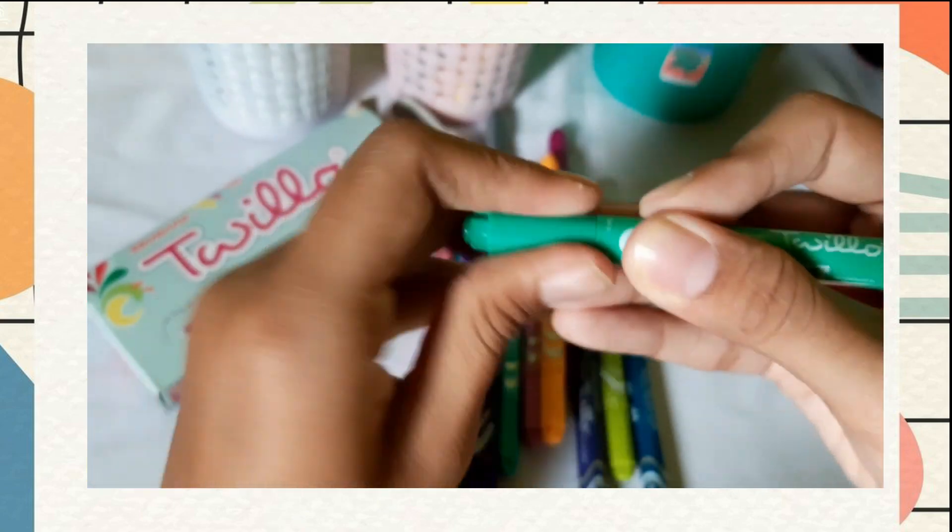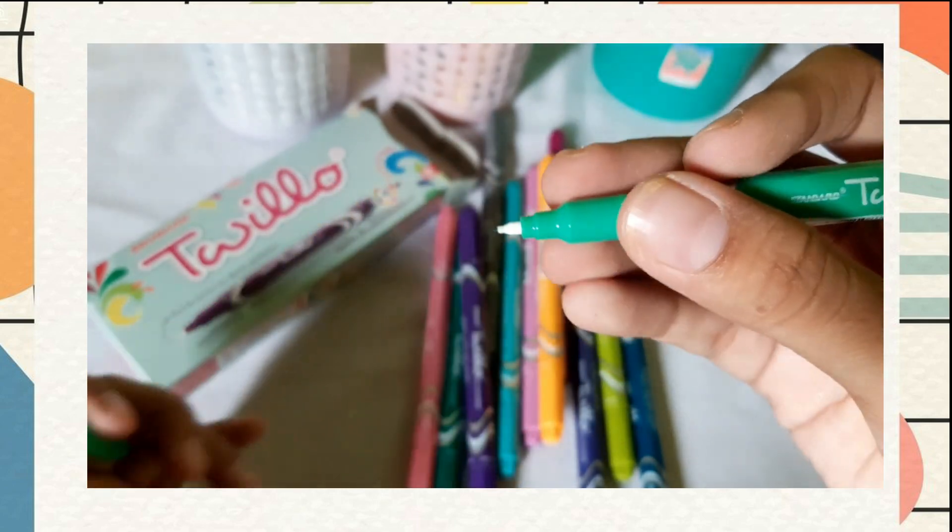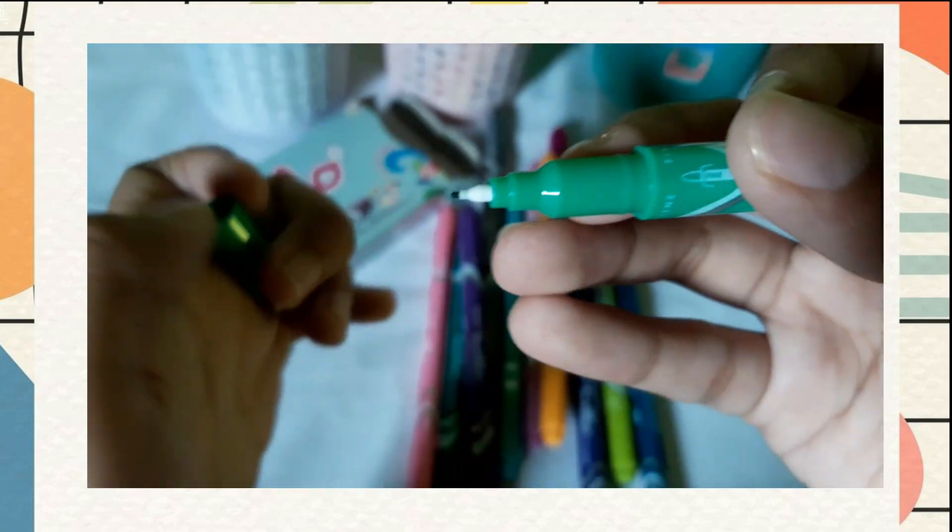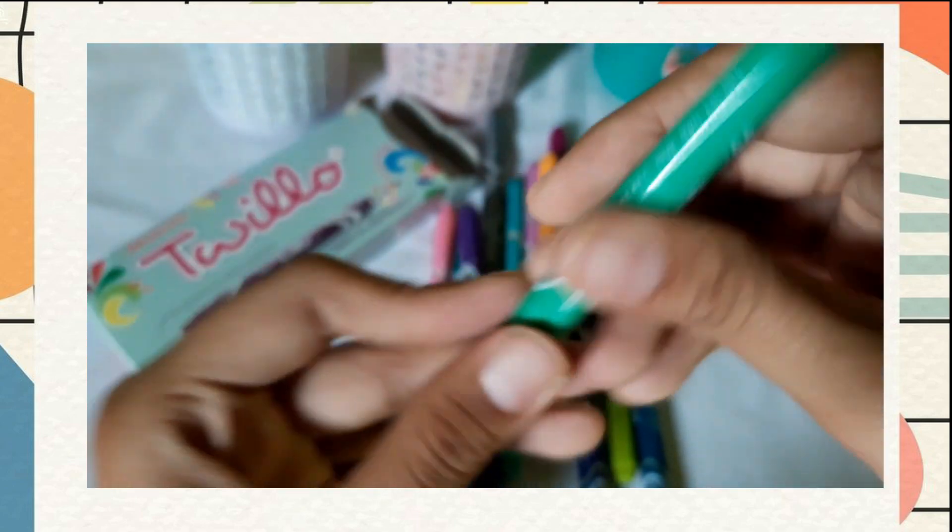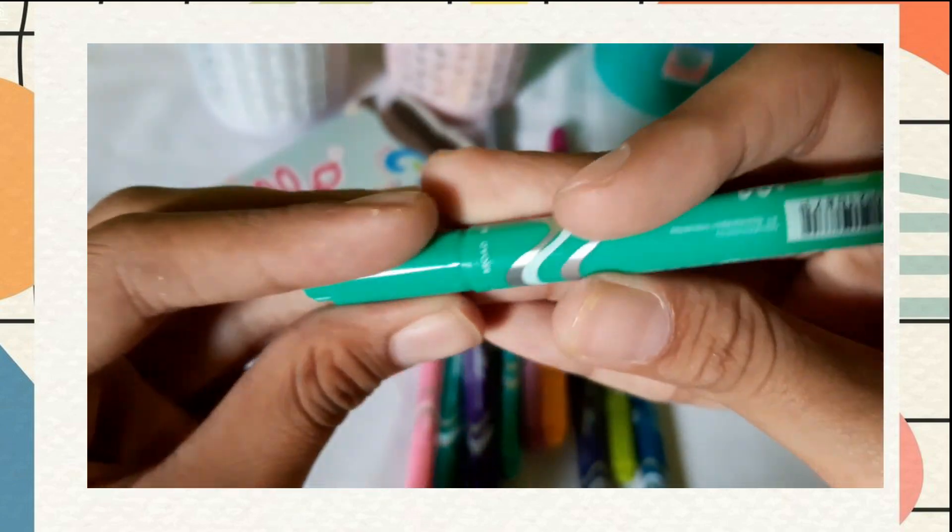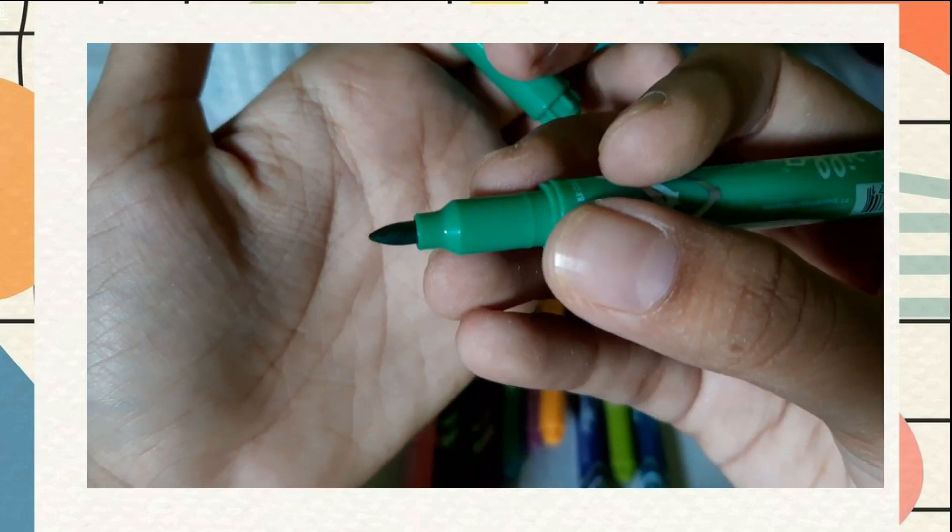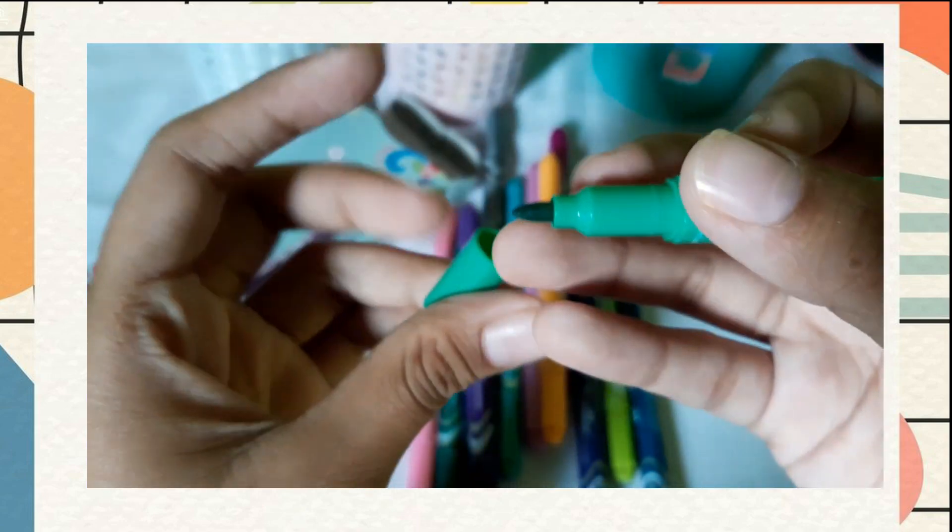Sesuai dengan namanya, Twilo ini punya dual tip. Yang pertama, fine tip. Dia tipnya ini kayak pulpen gitu tapi lebih watery. Dan yang kedua ada full tip, yang tipnya itu lebih kayak tool spidol.